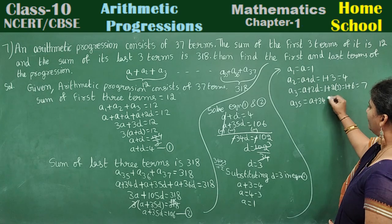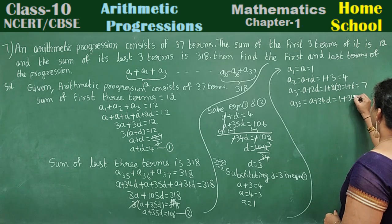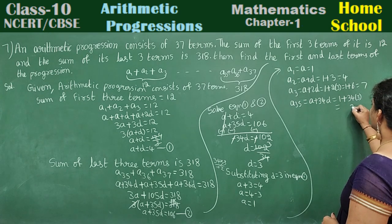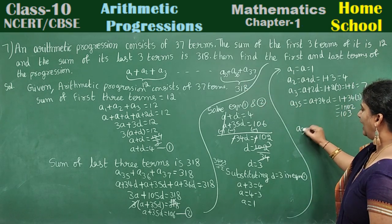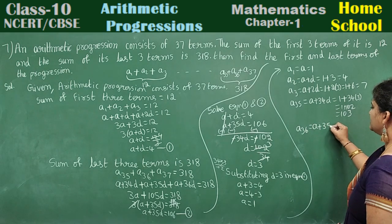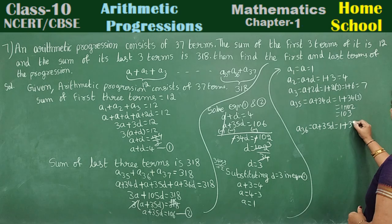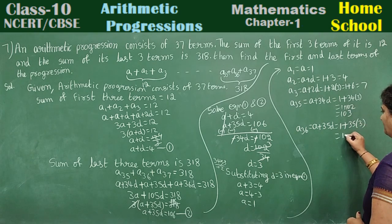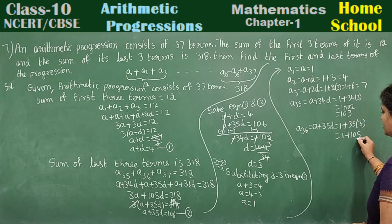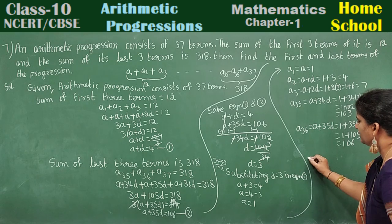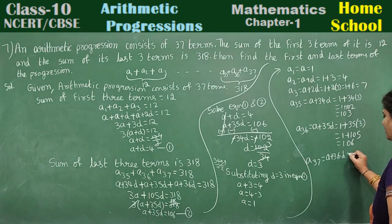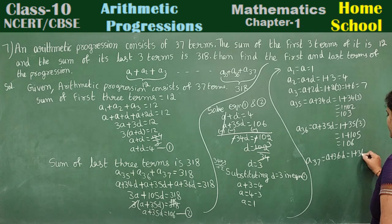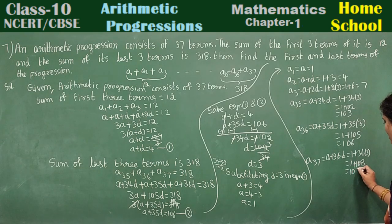Continuing: a36 equals a plus 35d equals 1 plus 105 equals 106. Last term a37, general form a plus 36d: 1 plus 36 times 3 equals 1 plus 108 equals 109. Also, a35 equals a plus 34d equals 1 plus 102 equals 103.